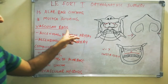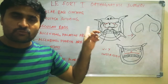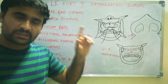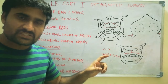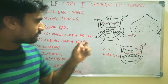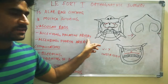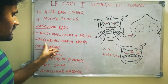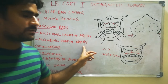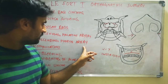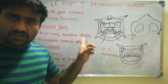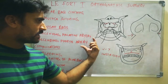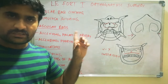The vascular basis for Le Fort 1 osteotomy: the osteotomized segment gets its blood supply from the ascending palatine artery of the facial artery and the ascending pharyngeal branch of the external carotid artery. These two vessel names can be asked as a PG question.